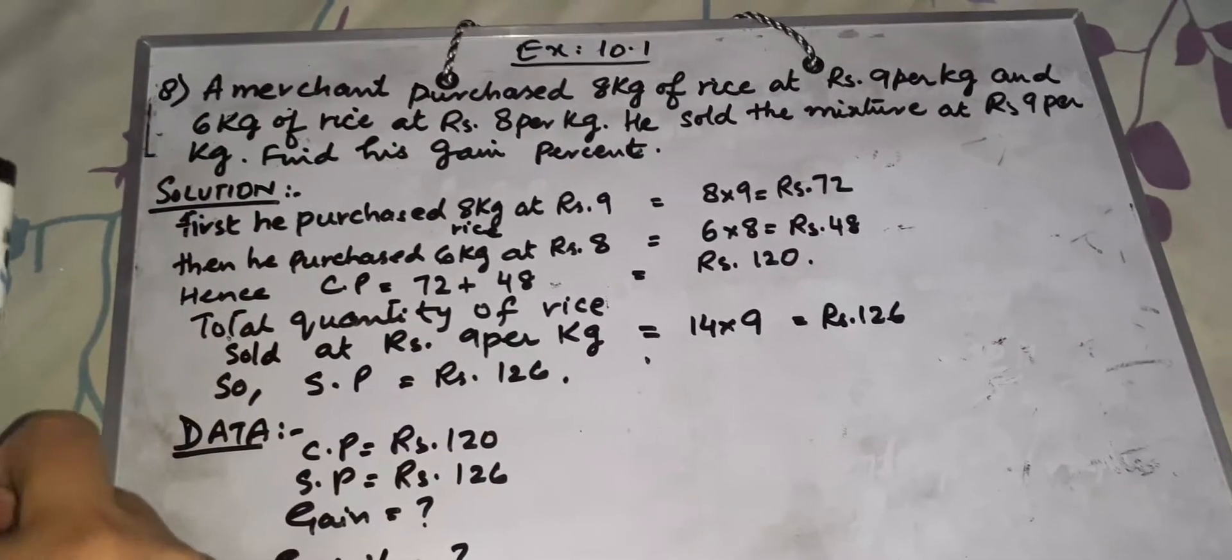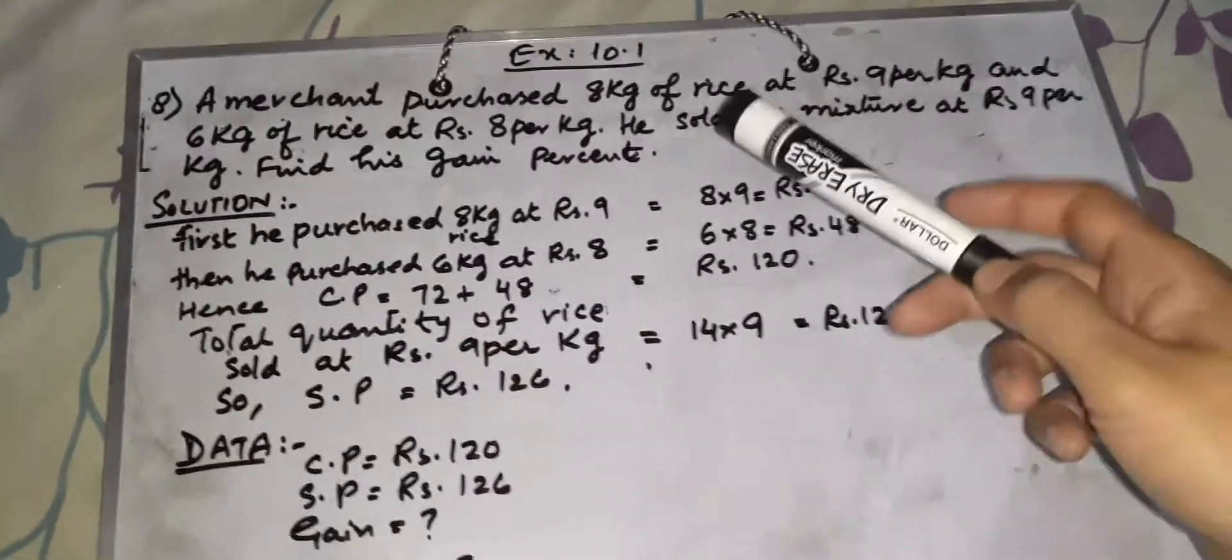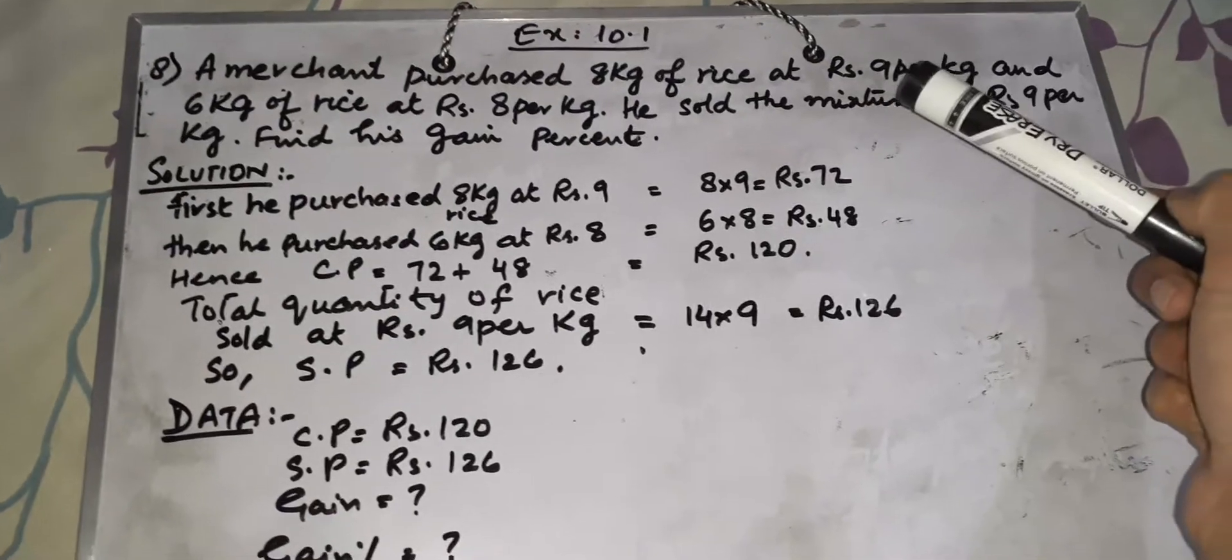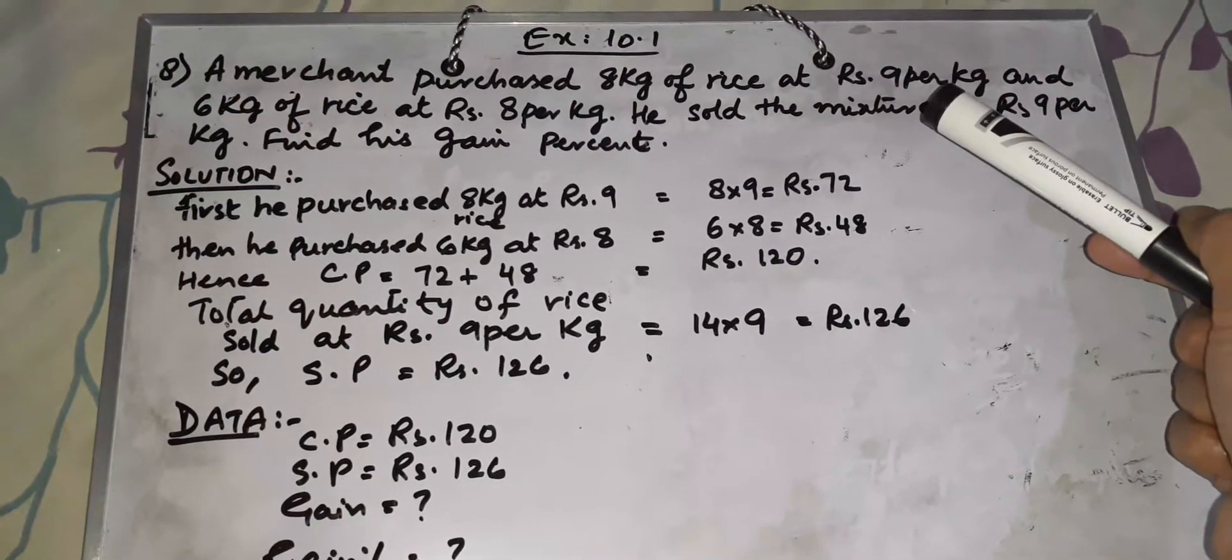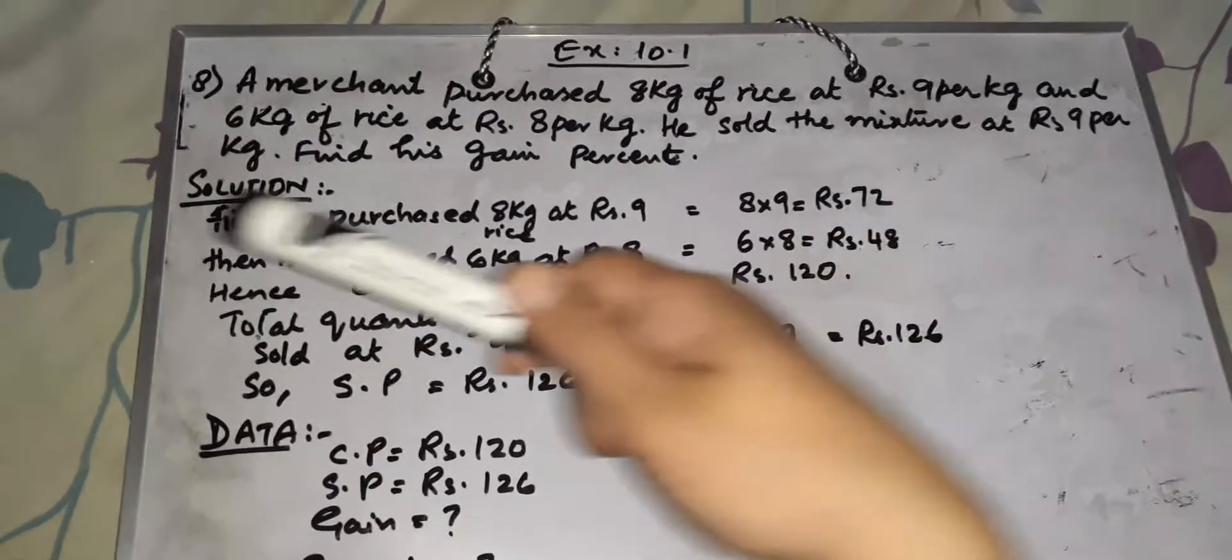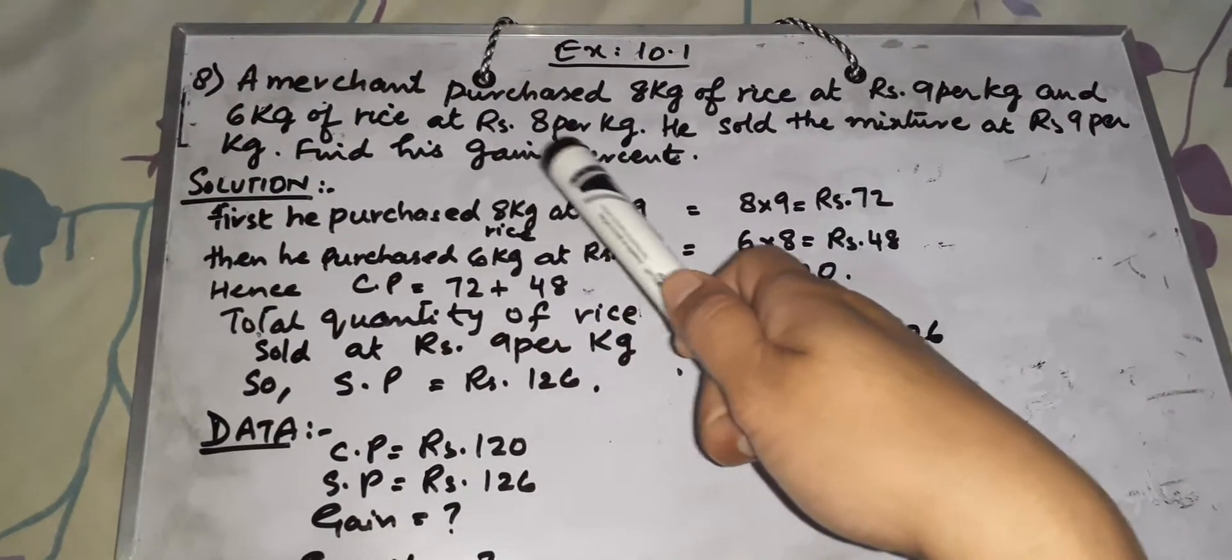Question 8: A merchant purchased 8 kg of rice at Rs. 9 per kg.